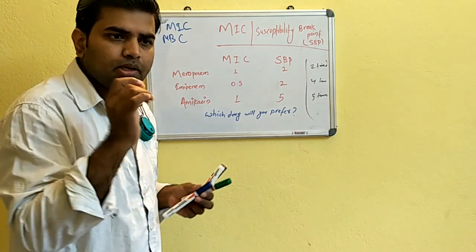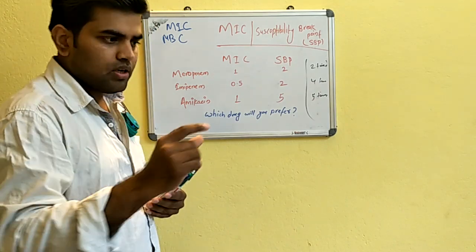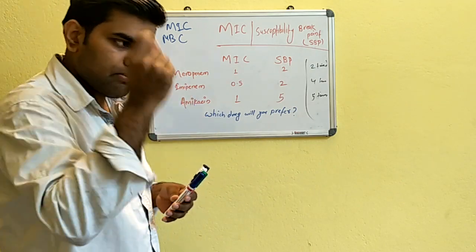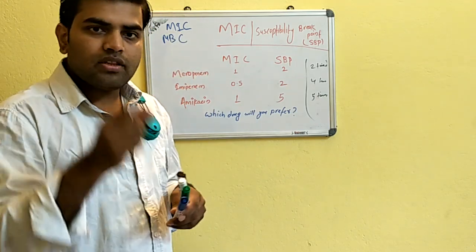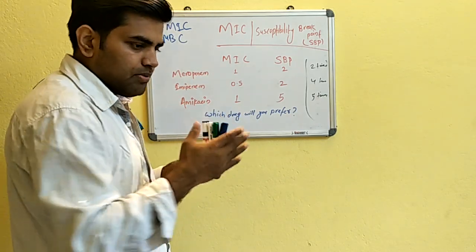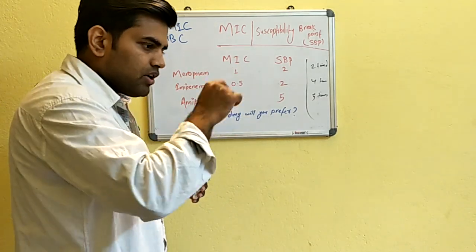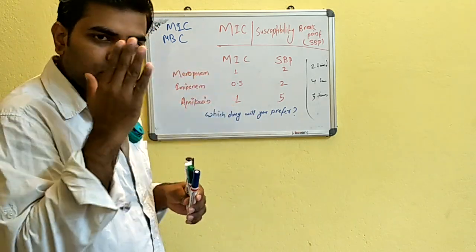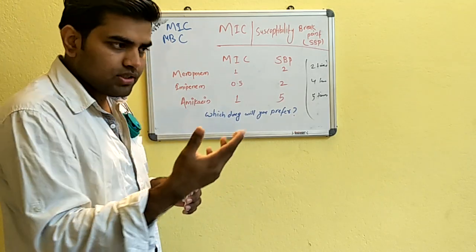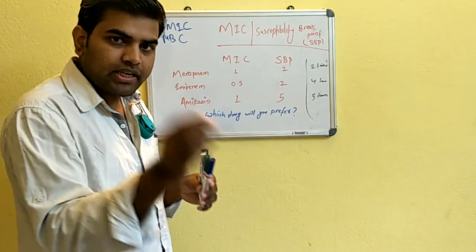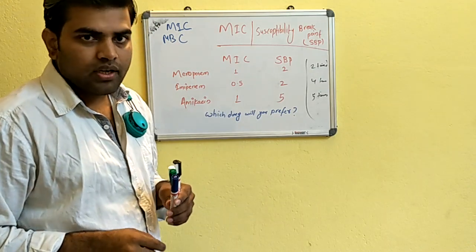MIC stands for minimum inhibitory concentration. To determine it, you take bacterial isolates in broth or normal saline, make aliquots, and add drug to each aliquot in serial dilutions — perhaps 10 to 14 aliquots. You incubate them, and the minimum concentration at which all bacteria are inhibited — where visually it appears that all bacteria have been cleared — is called the minimum inhibitory concentration.